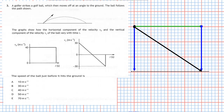We have 40 m/s horizontally and 30 m/s vertically, with a right angle between them. This is a 3-4-5 triangle scaled up, giving a resultant speed of 50 meters per second. The speed of the ball just before it hits the ground is 50 m/s, which is answer D.